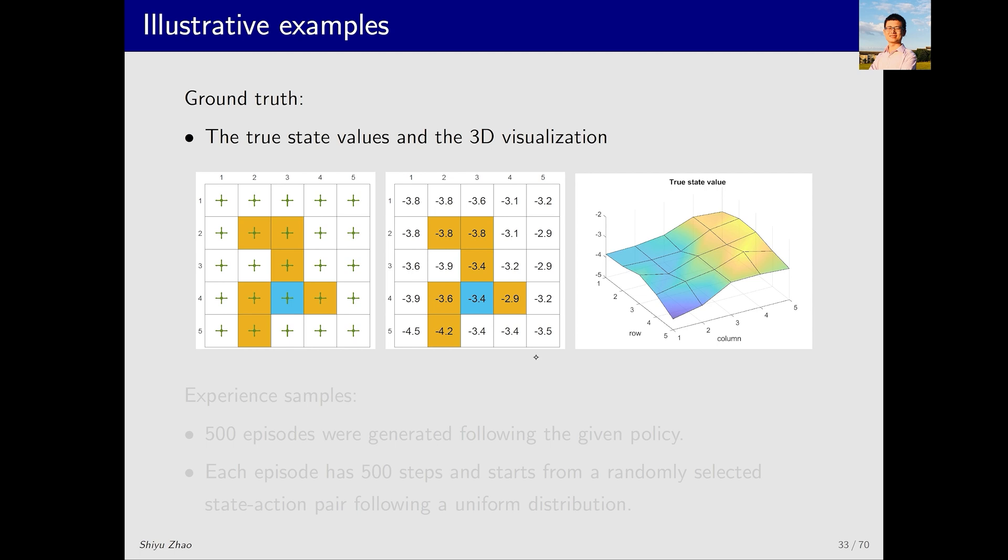To better illustrate the state values, we can re-plot this 2D table as a 3D surface. This 3D surface has its horizontal and vertical axes corresponding to the horizontal and vertical axes in the table. For example, this point, which is the lowest point on the surface, corresponds to the coordinates. It corresponds to this cell, and its value is negative 4.5, which is also the smallest value in the entire table.